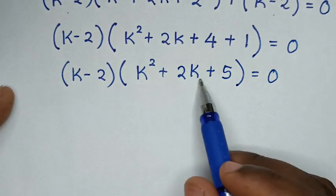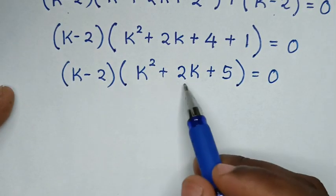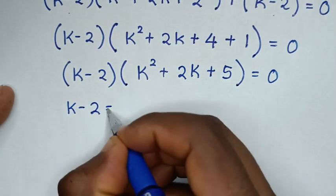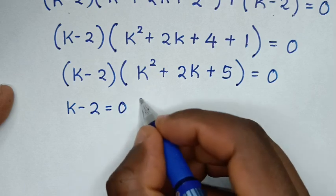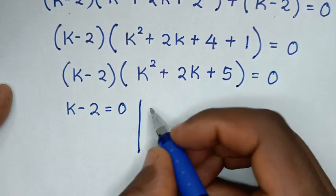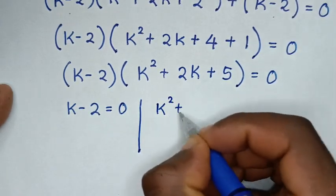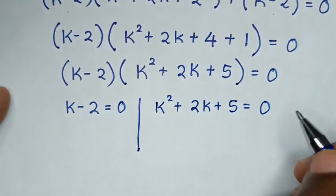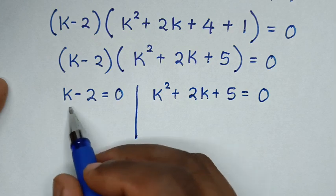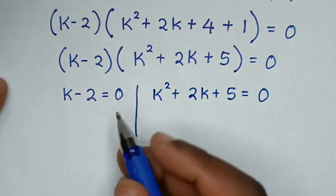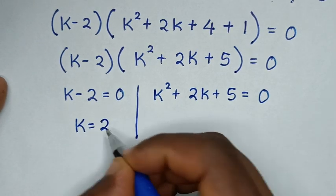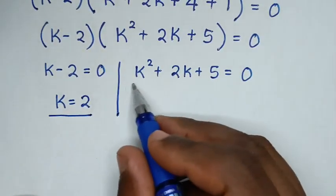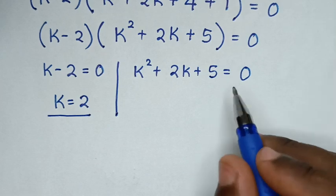From here we have two equations with two solutions. The first solution is k minus 2 equals 0, and the second solution is k squared plus 2k plus 5 equals 0. From the first solution, taking negative 2 to the other side, it will be k equals 2. So this is the first value of k.